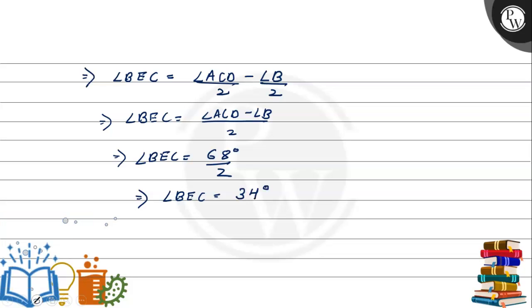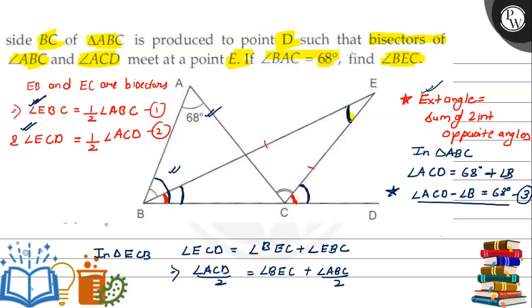34 degrees. So the final answer to this question is angle BEC equals 34 degrees. That is the final answer to this question. Hope you have understood it well. Best of luck. Thank you.